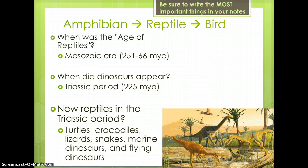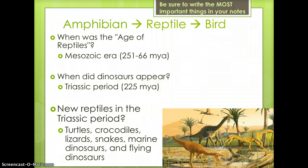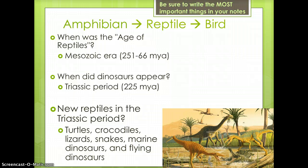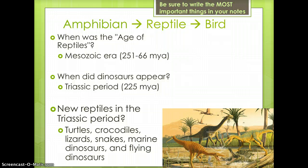The Mesozoic era, which occurred between 251 to 66 million years ago, is considered the age of reptiles because there was a high abundance of reptiles. Dinosaurs are reptiles. Dinosaurs first appeared in the fossil record during the Triassic period, 225 million years ago, and also existed during the Jurassic and Cretaceous periods. Tyrannosaurus rex did not appear until the Cretaceous period. Other reptiles that appeared during the Triassic period were turtles, crocodiles, lizards, snakes, marine dinosaurs, and flying dinosaurs.